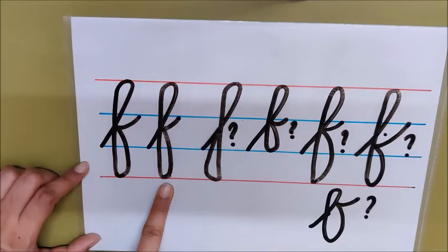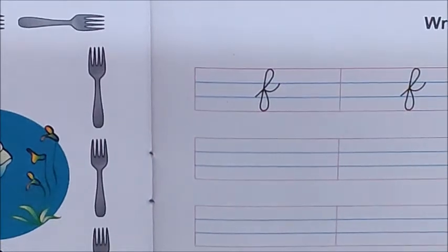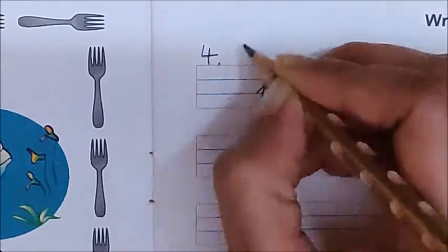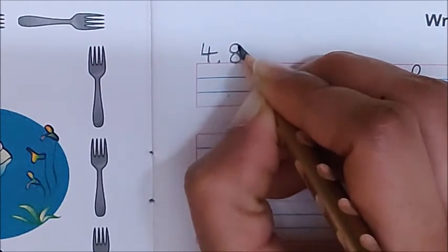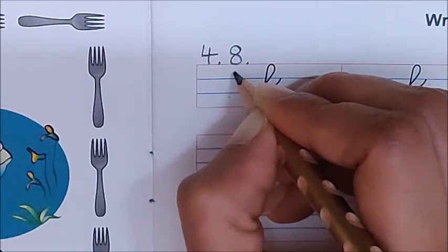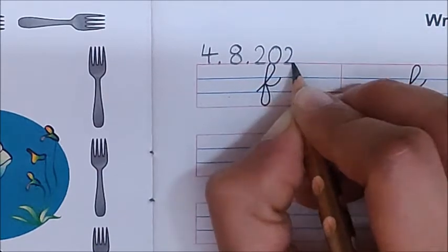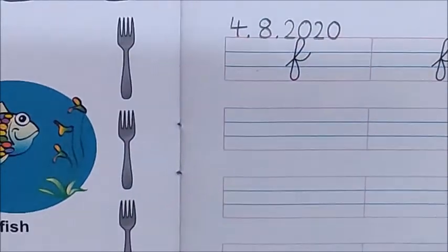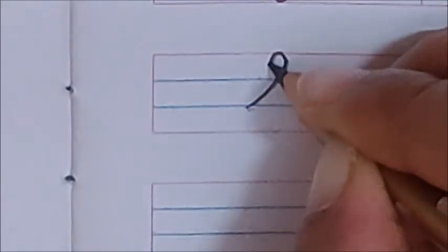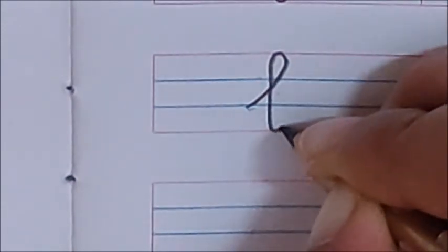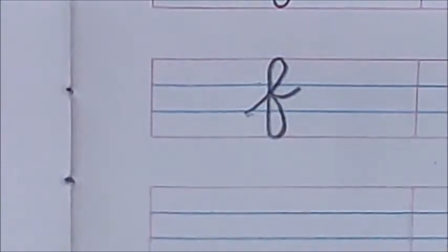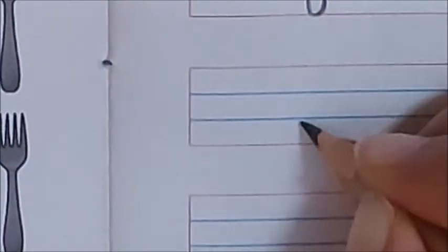Now, let us write letter F in our book. Today is August 4. So, write down the date on the red line. 4 dot 8 dot. Children, I have written 8 here because August is the 8th month. 20, 20. Now, begin writing. Go up. Touch the red line. Go down. Again, touch the lower red line. Go up. Touch it here. And then again up. F.